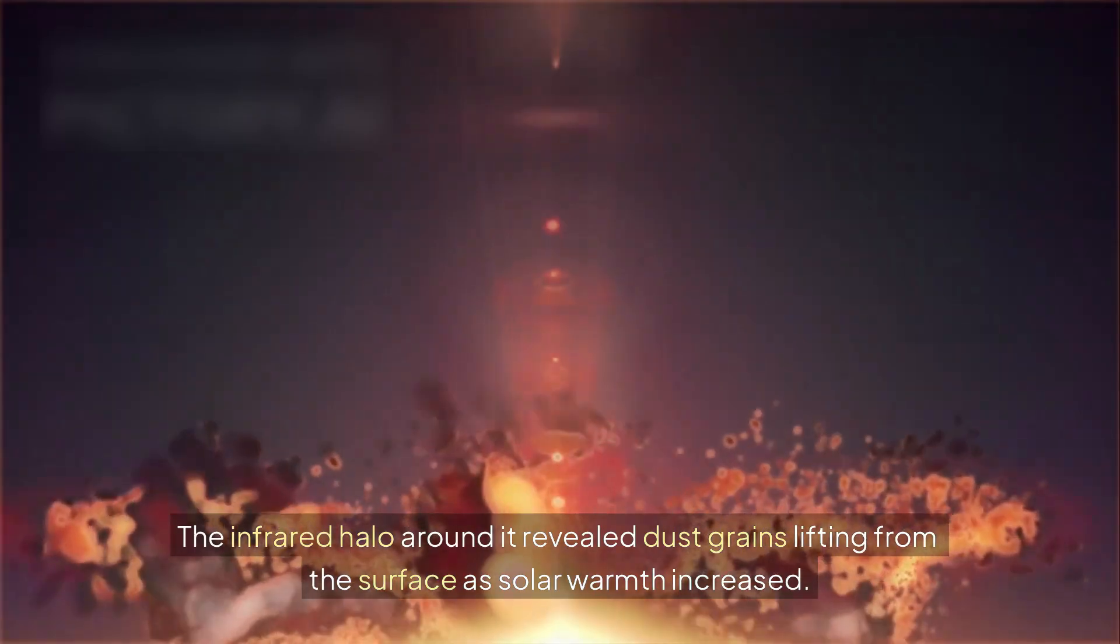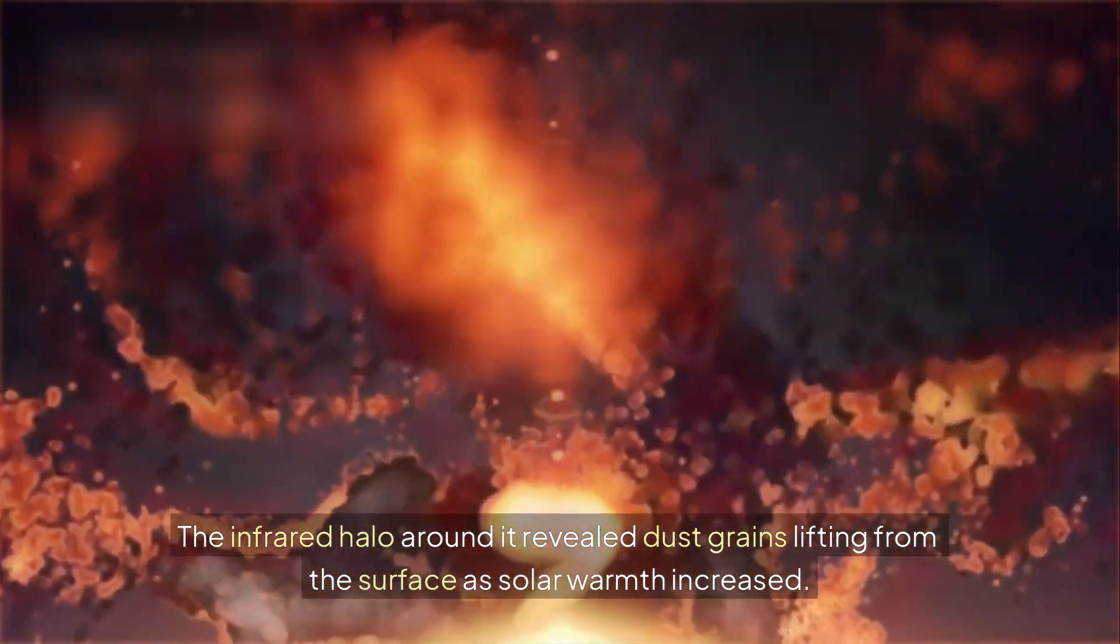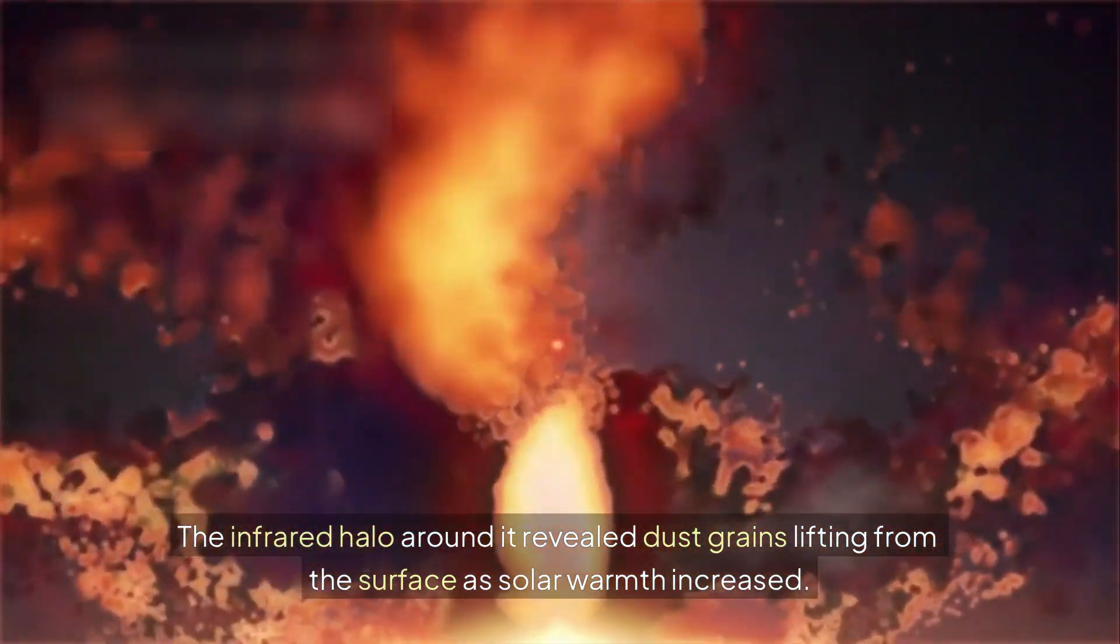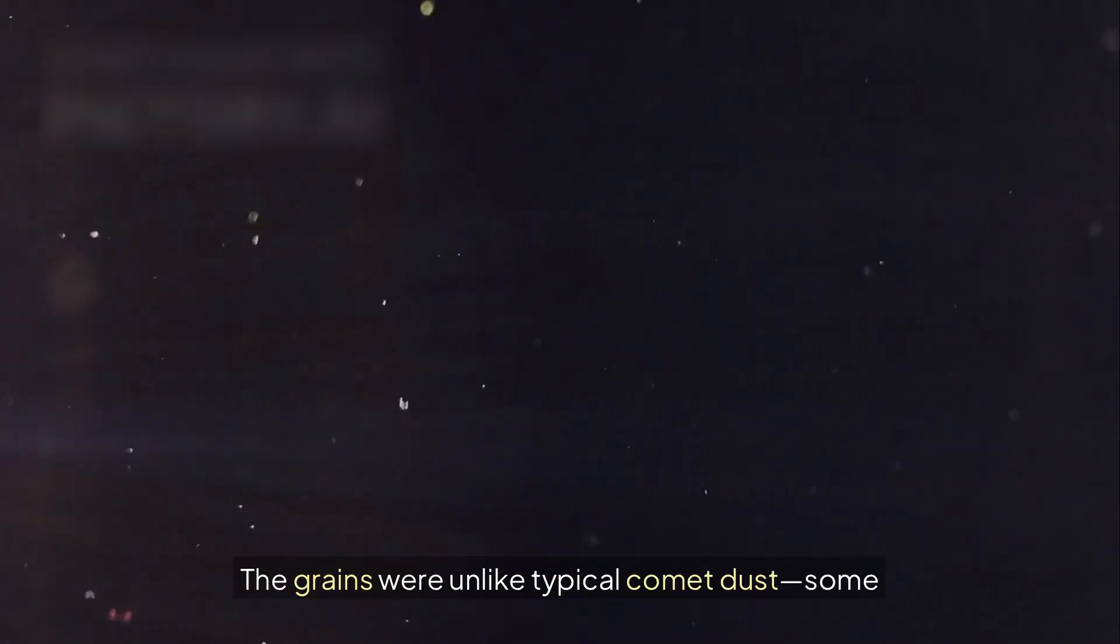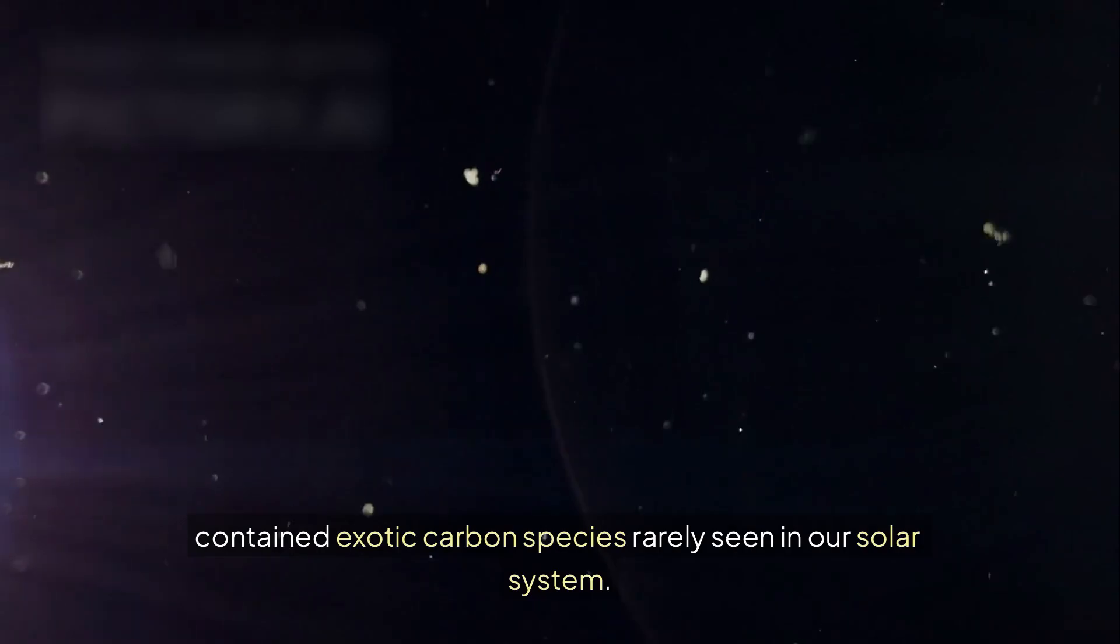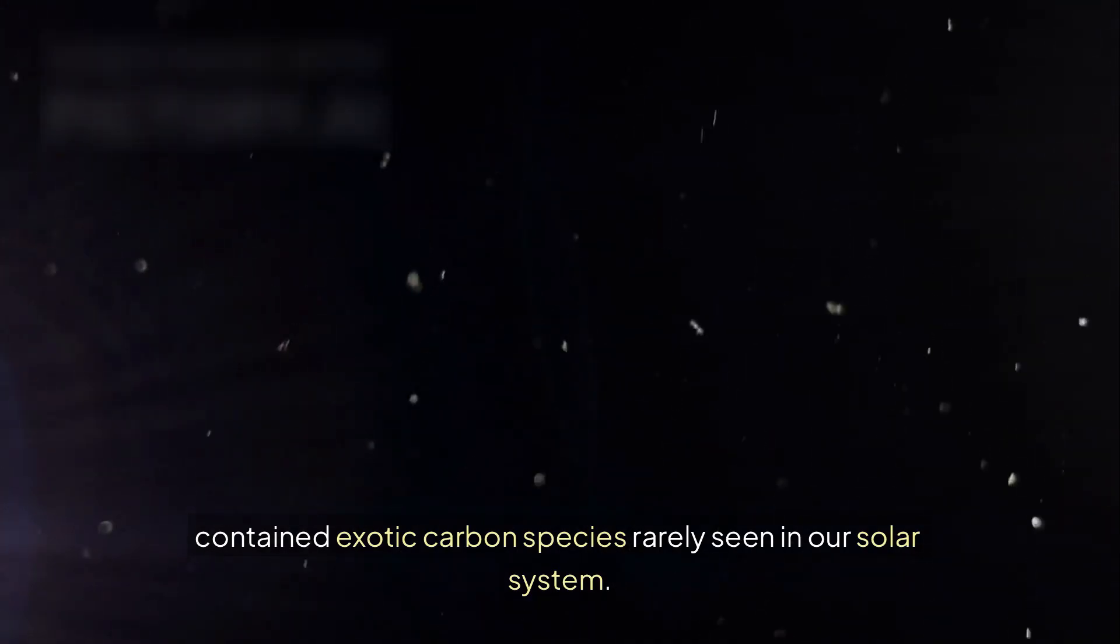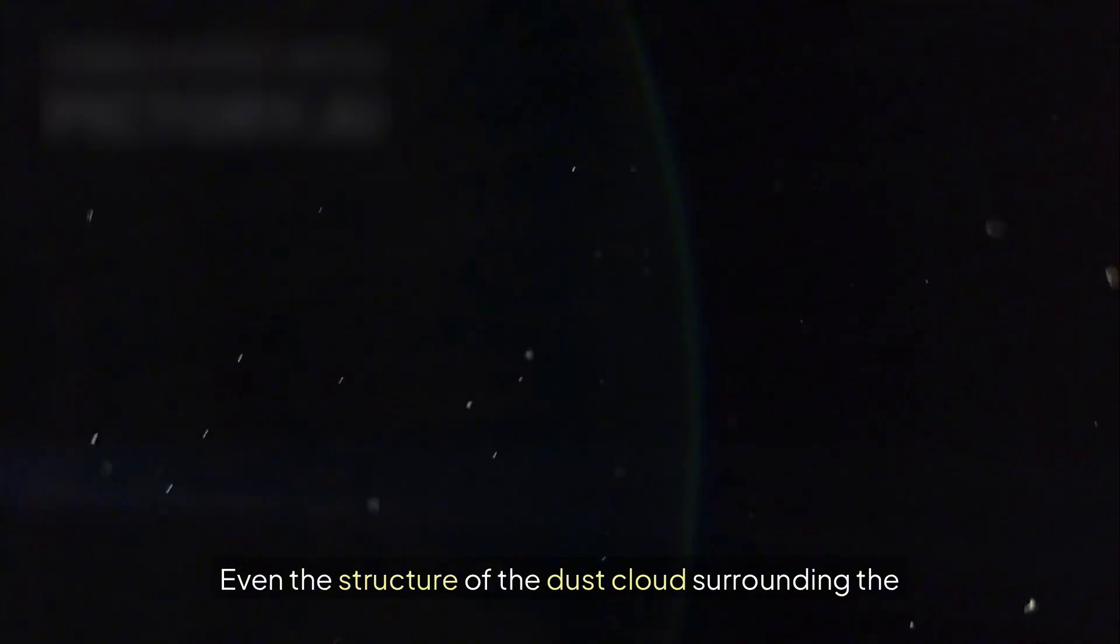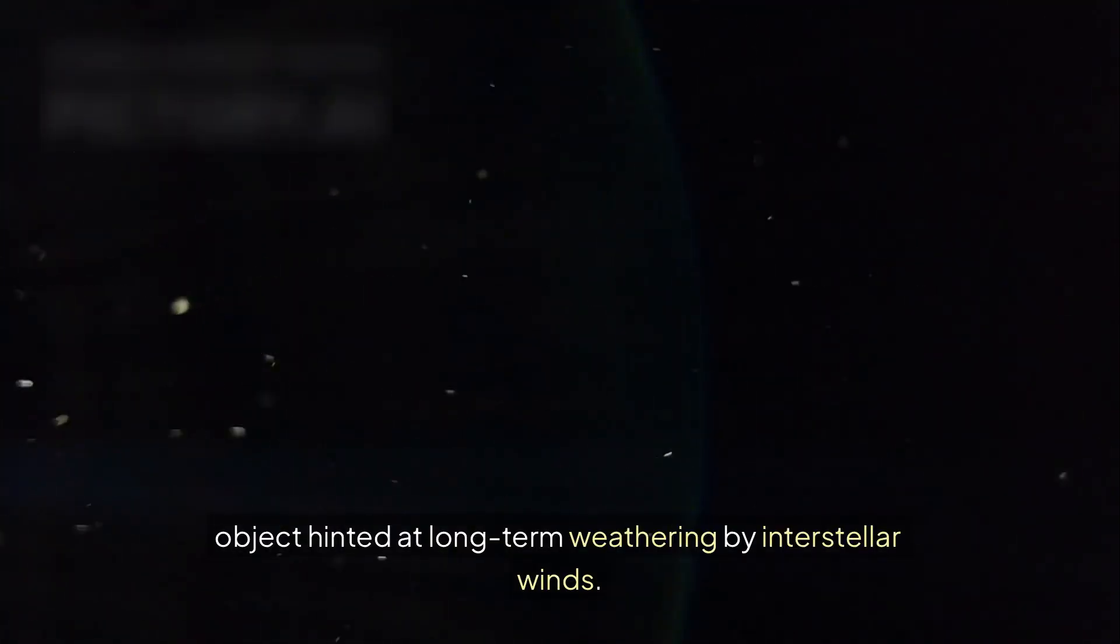The infrared halo around it revealed dust grains lifting from the surface as solar warmth increased. The grains were unlike typical comet dust. Some contained exotic carbon species rarely seen in our solar system.